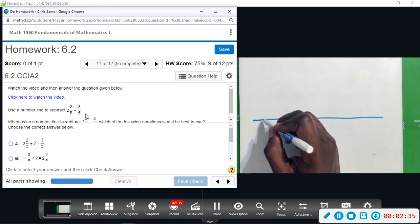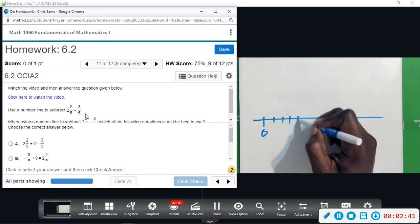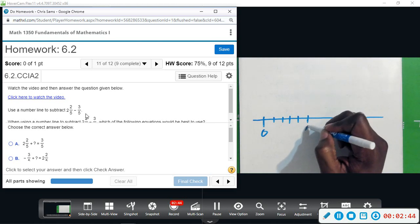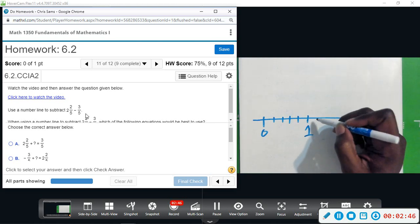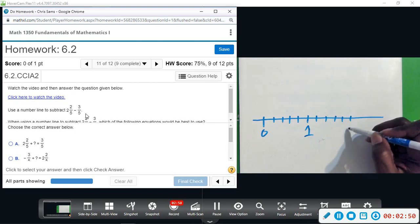Say a number line, I'm gonna put it into fifths. So this is zero, one, two, three, four, five. This will be two, this will be two.